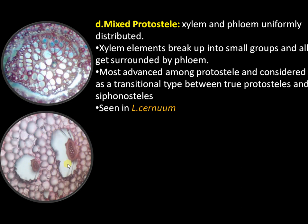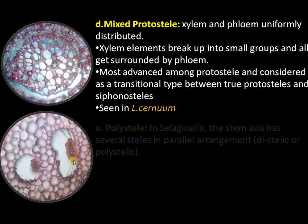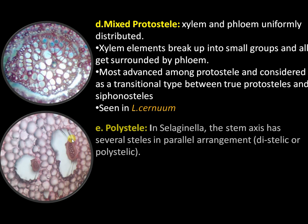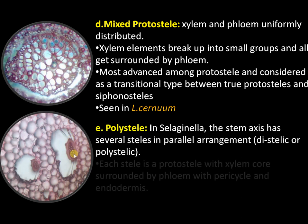This is a polystelic condition, present in Selaginella. Within the stem we can see more than one stelar system — it may be distelic, monostelic, or even polystelic. You can see there are two stelar regions, and the central stele is a protostele with central xylem surrounded by phloem.